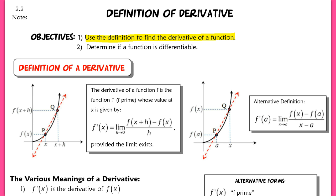Our second objective is something we might not get to in this particular lesson — it depends on how long it takes us to get through the first two pages of this note sheet. We want to determine if a function is differentiable. The process of finding a derivative is called differentiating, and we'll look at specific characteristics using limits to determine if the function is differentiable.